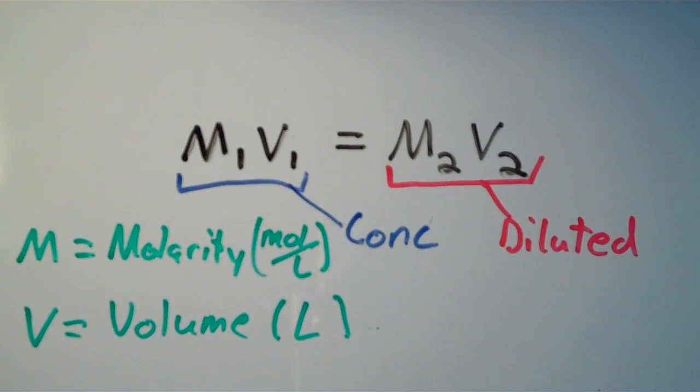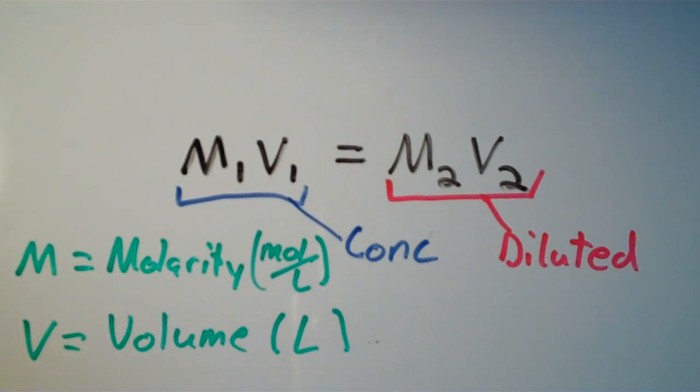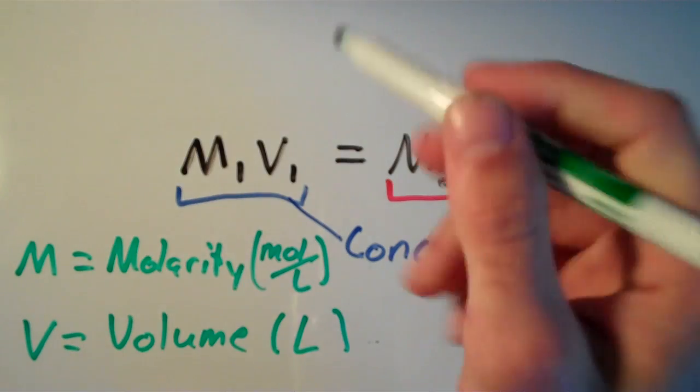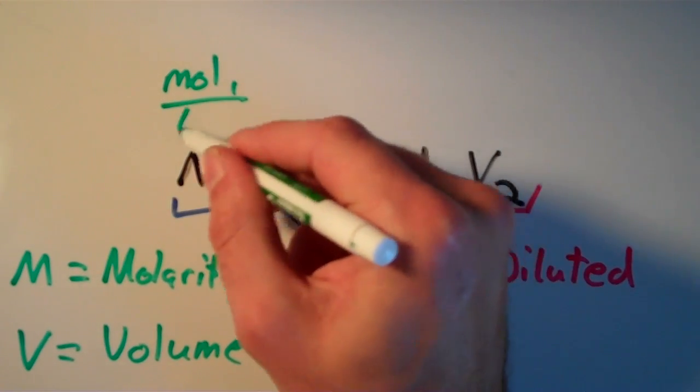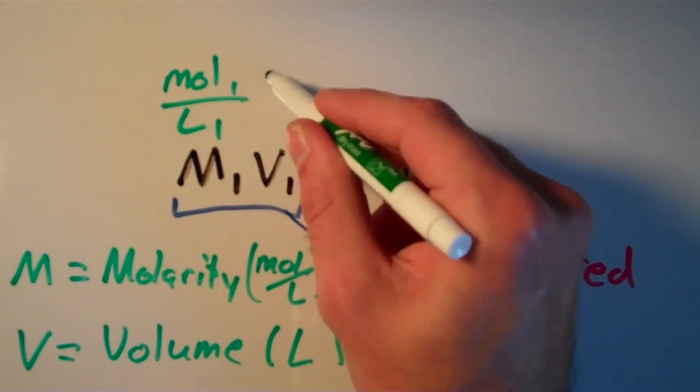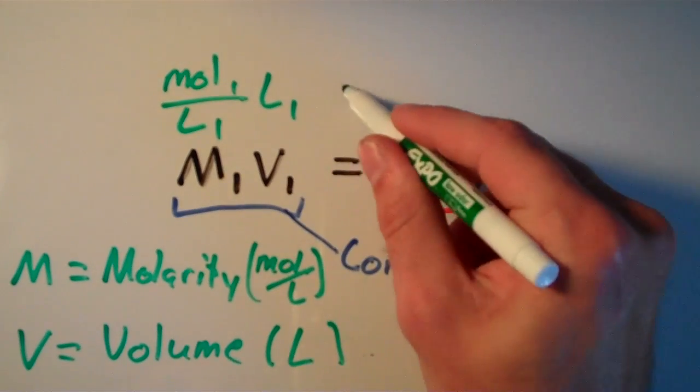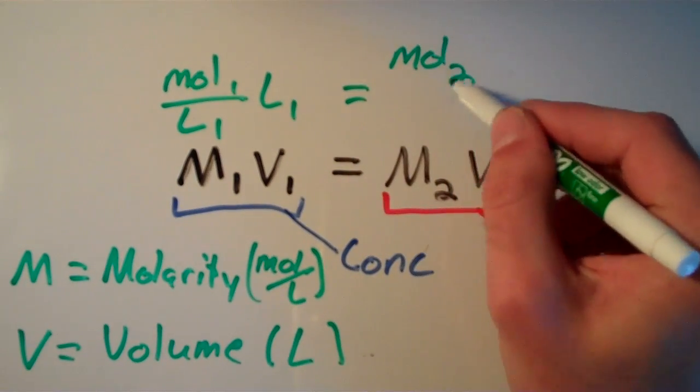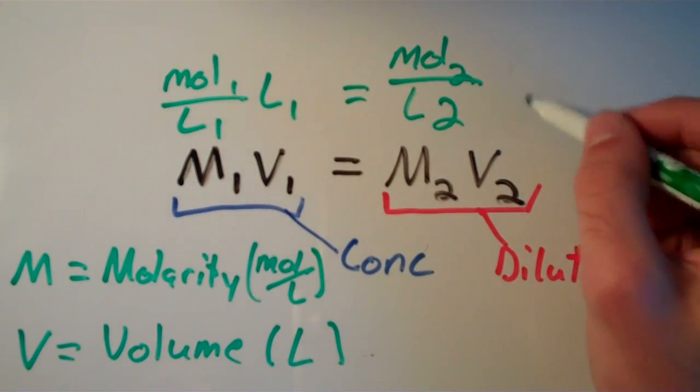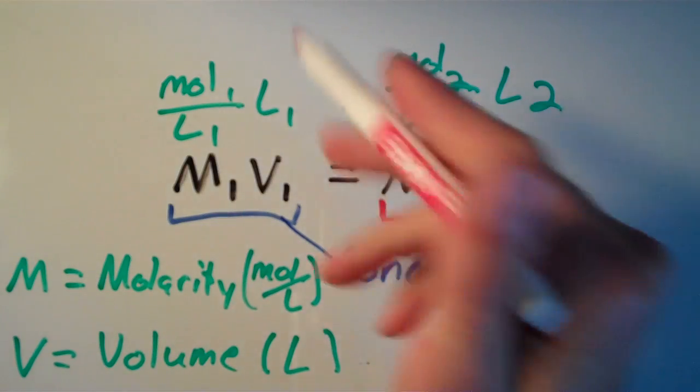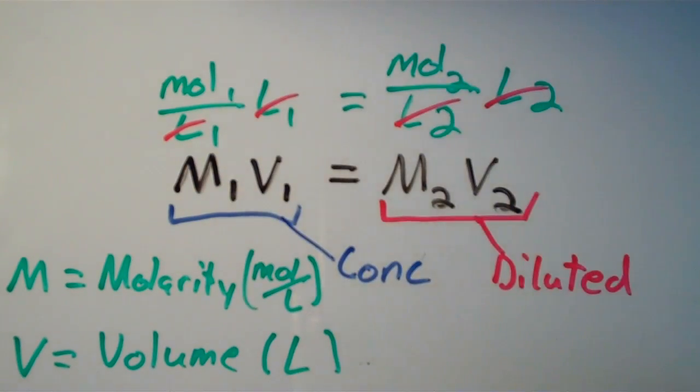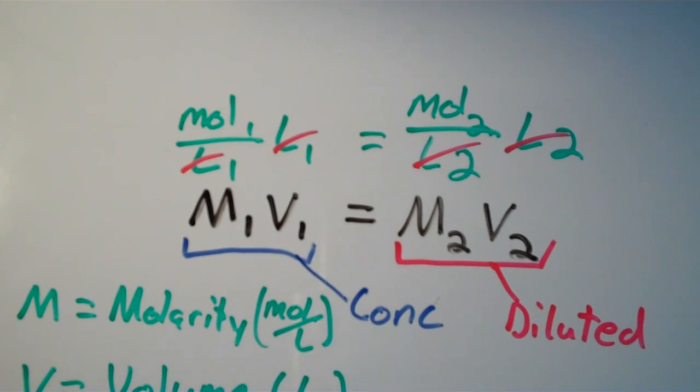And the reason why they're related by this equation, well, what is molarity? Remember molarity is moles per liter. So we have the moles 1 over the liters 1 times the volume of 1, which is in liters usually. And then we have the moles in 2 over the liters in 2 times the liters in 2. Well we can cancel out liters on both sides and we're left with nothing but moles. So what this equation is really saying is that the amount of moles is conserved when we dilute a solution, which is true because we're not messing with the solute, we're messing with the solvent.